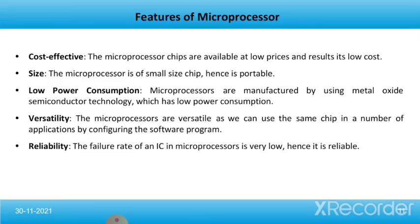Now we'll talk about the features of the microprocessor. First is cost-effectiveness — microprocessor chips are available at low prices, resulting in low cost. The size of the microprocessor is small, hence it is portable. Next is low power consumption — microprocessors are manufactured using metal oxide semiconductor technology, which has low power consumption. Next is versatility — microprocessors are versatile as the same chip can be used in a number of applications by configuring the software program. Lastly, reliability — the failure rate of an IC in a microprocessor is very low, hence it is reliable.